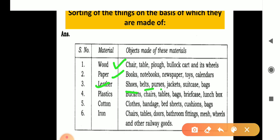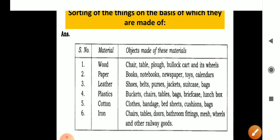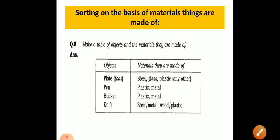Leather: shoes, belt, purse, jackets, suitcase, bags, etc. Plastic: bucket, chair, table, bags, briefcase, lunch boxes, etc. Cotton: cloth, bandage, bed sheet, cushion, bags. Iron: chair, table, doors, bathroom fittings, mesh, and wheels, among many other things. On the basis of the material they are made of, we can classify materials or objects.